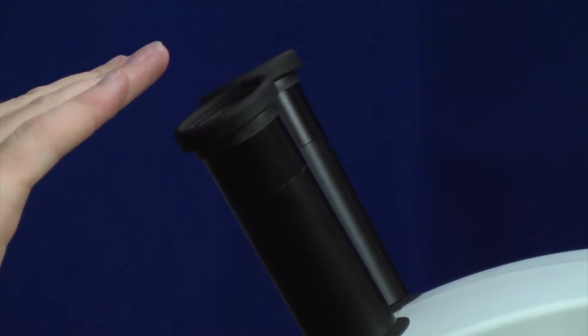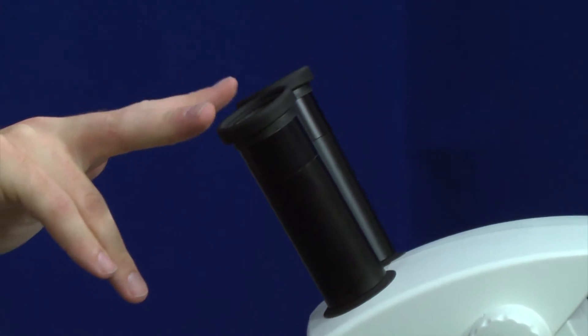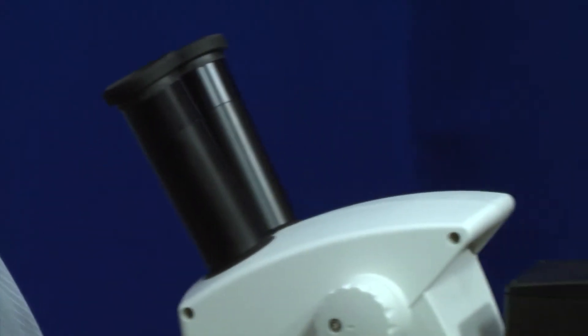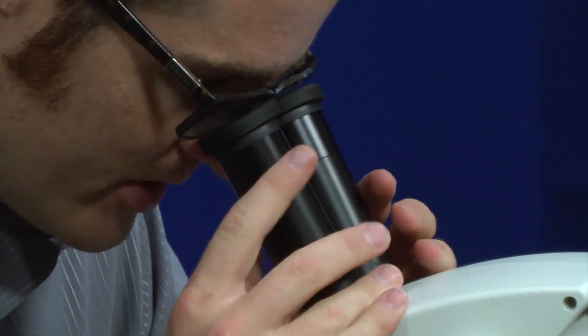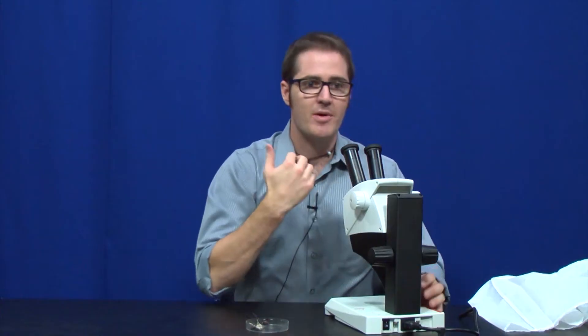These are what we call high eye point eyepieces. What that means is the focus point is actually right about here on the microscope. Older microscopes, you might remember having to put your eyes right down next to the lenses to see things. In this case, we actually want our eyes a little bit further away. This was designed for people like myself who wear eyeglasses. So when I actually look through the microscope, I'm going to put my glasses right on the eyepieces, and that's going to put my eyeballs in exactly the right place to focus and see a nice clean image.